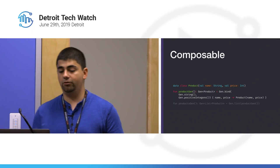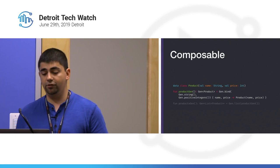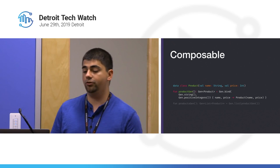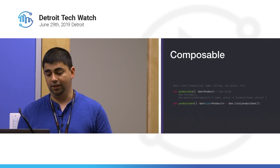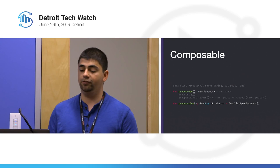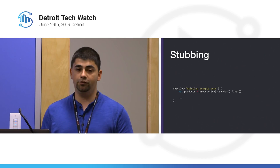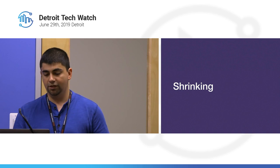The great thing about generators is that they're composable. Say we have a product requiring a name (string) and a price (int). You can use the bind function to combine a string generator and a positive integers generator to randomly generate a name and a price, then construct your product. Now you have a product generator, and wrapping that with gen.list gives you a generator for a list of products. This is also useful for stubbing in example-based tests — you can use generators to provide random data.